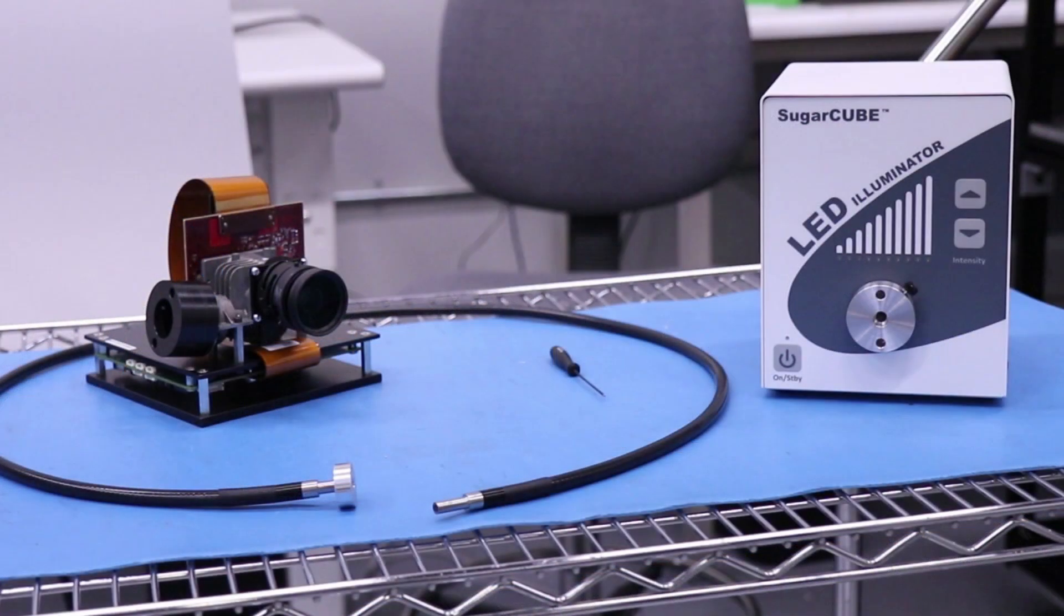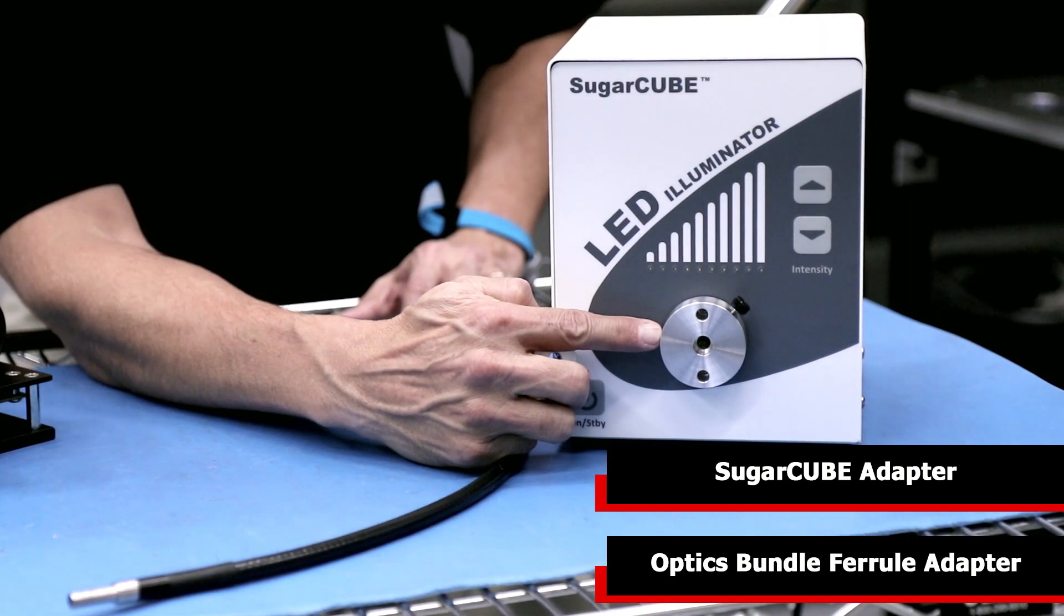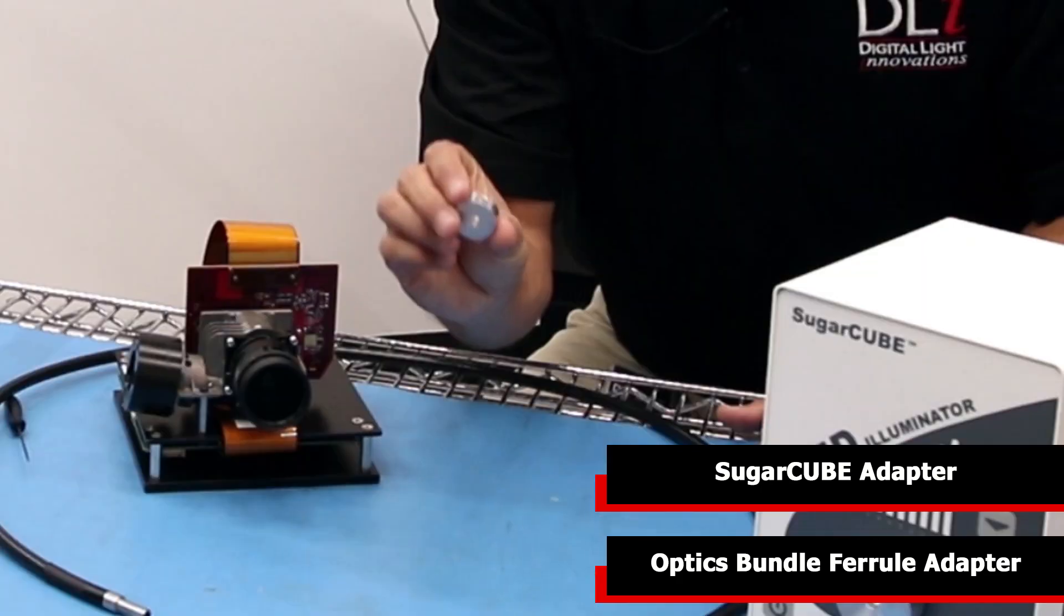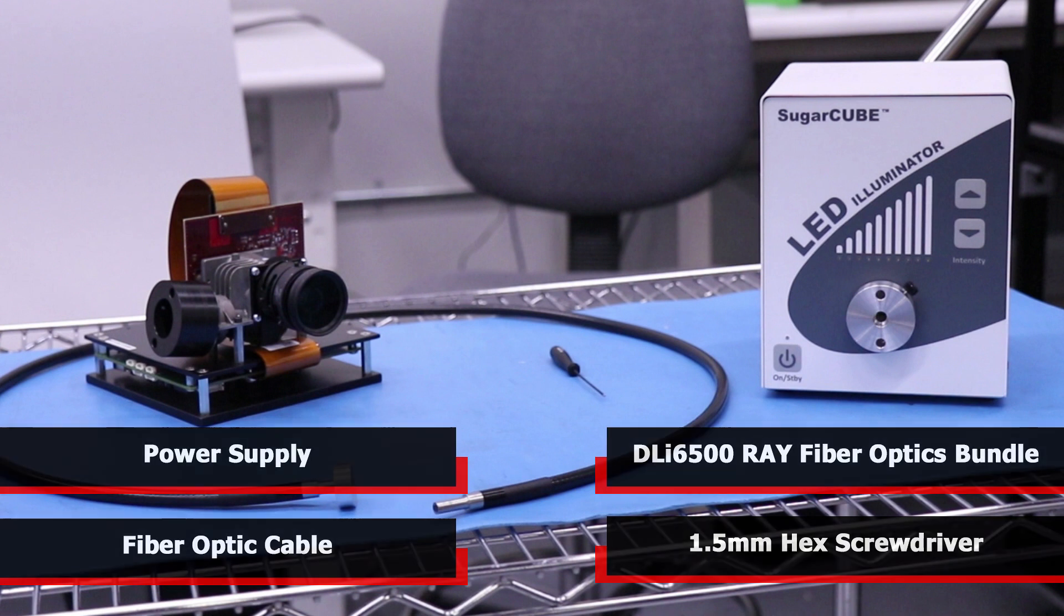Now that you've taken the proper precautions let's review what items you're going to need. Your Sugarcube LED light source, two adapters, power supply, your fiber optic cable, your DLI 6500 ray fiber optics bundle, and 1.5 millimeter hex screwdriver.